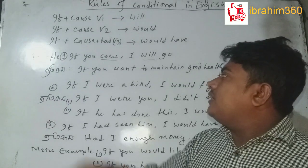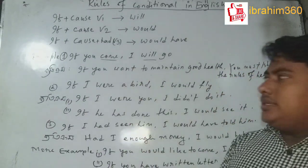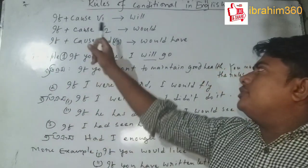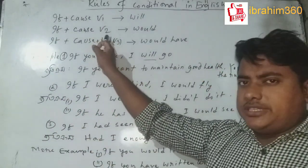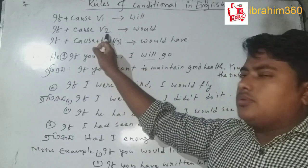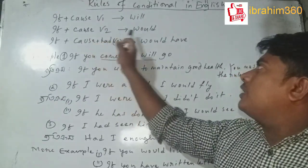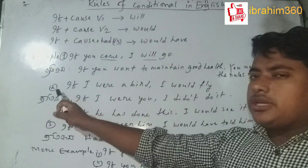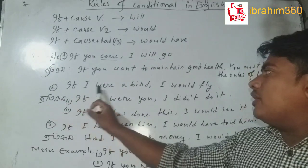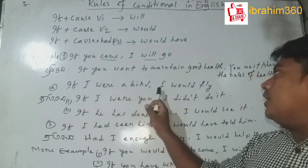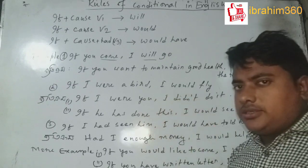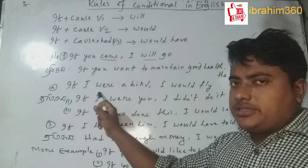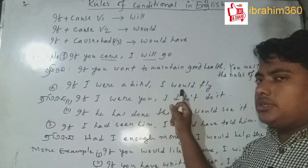Then, another sentence: if the if-clause is past tense — B2 — then I will write the word 'would.' For example: 'If I were a bird, I would fly.' So if the if-clause is past tense, I will write the word 'would.'